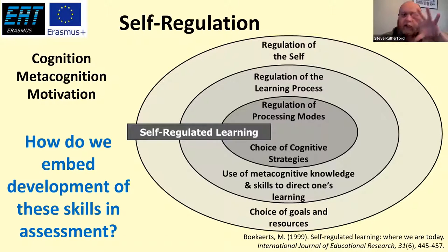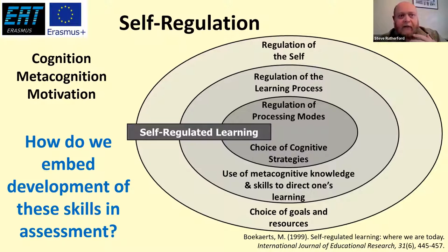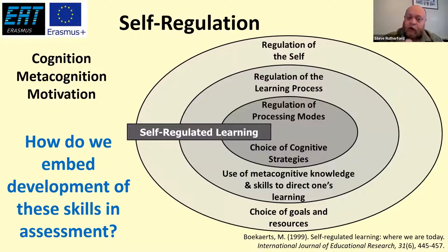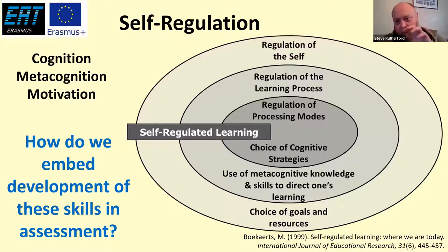In order to get those right, you need to have metacognitive strategies — being able to identify whether what you're doing works or not, being able to see if the learning strategy you've got for revising for an exam is effective and if not, how to change it. Then in order to regulate all of those, you need to have the metacognitive dimension: being able to identify your goals, the reason you're learning, the things you're trying to move towards. So how do we get students to be effective in each of those three domains through the assessment that we give them?